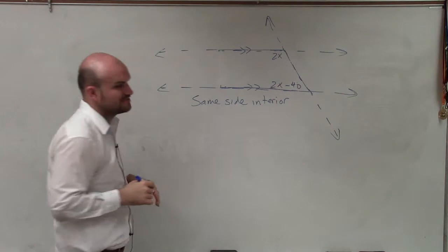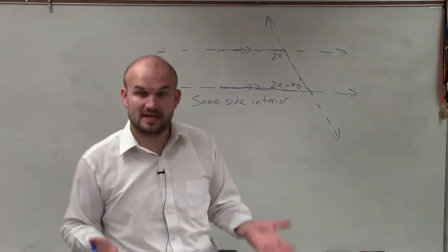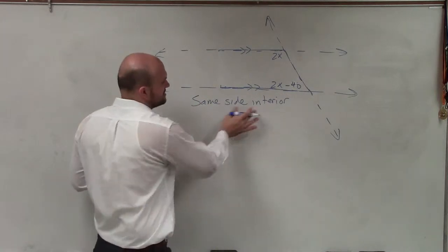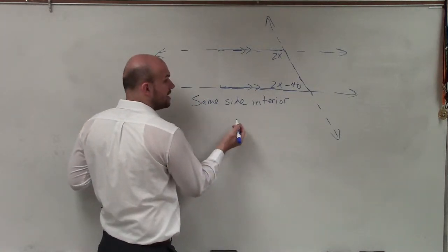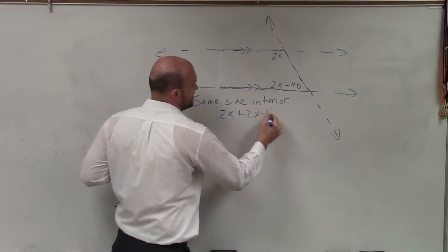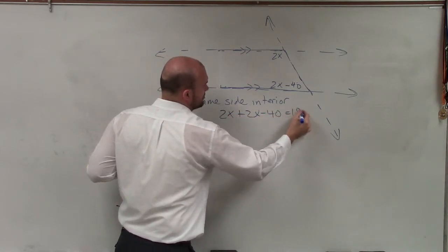And our angle relationships for same side interior, they're the only ones that are supplementary. The rest of our angle relationships are equal to each other. So since these are supplementary, that means they add up to 180. So I can say 2x plus 2x minus 40 is equal to 180.